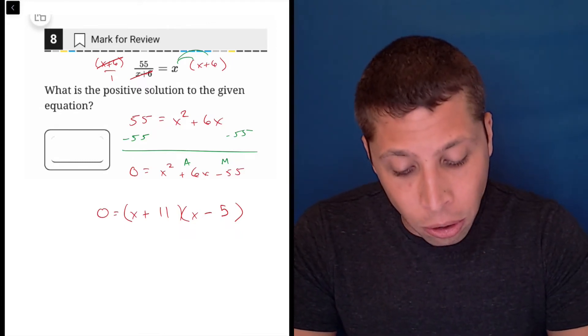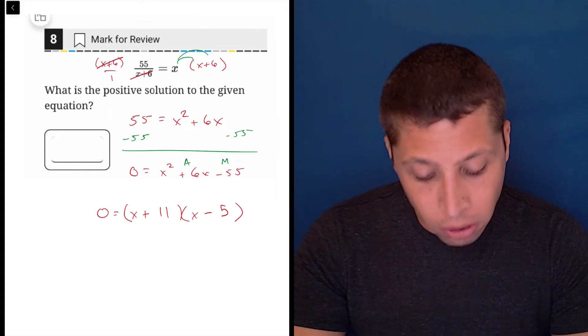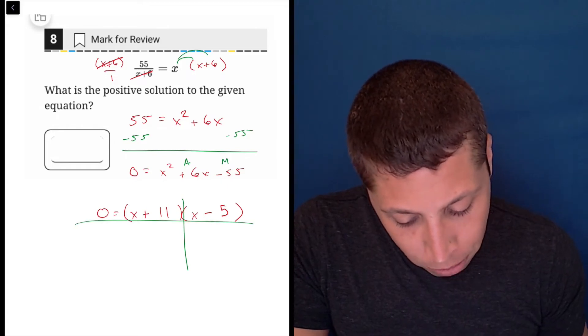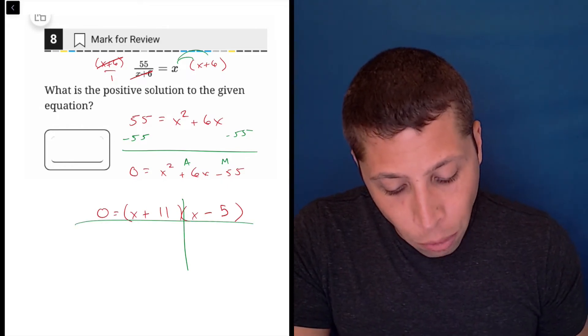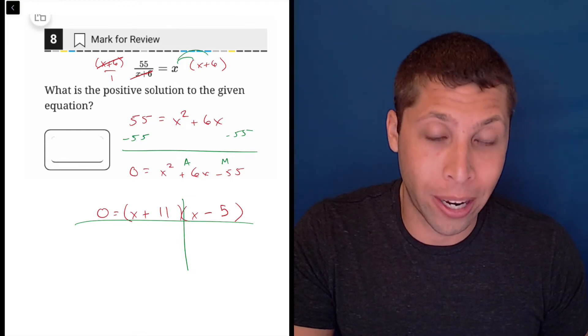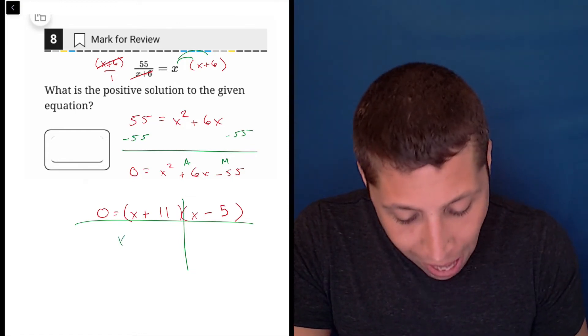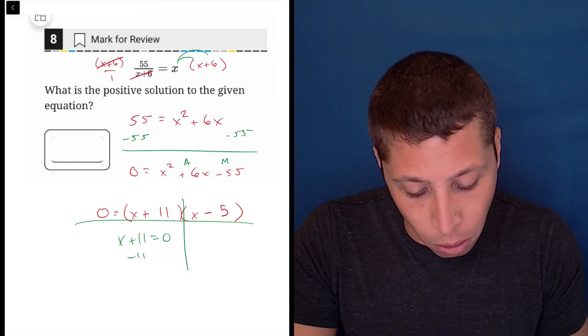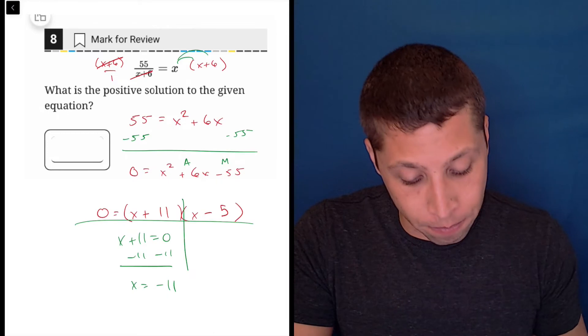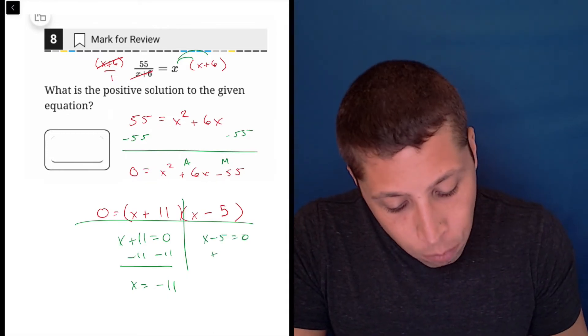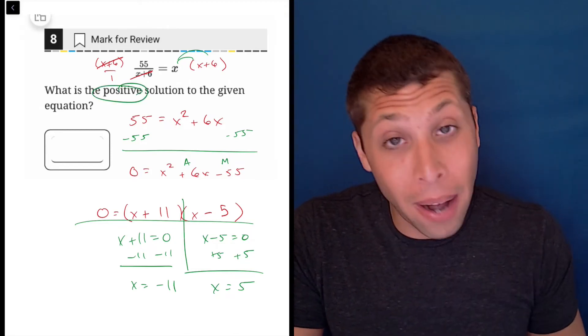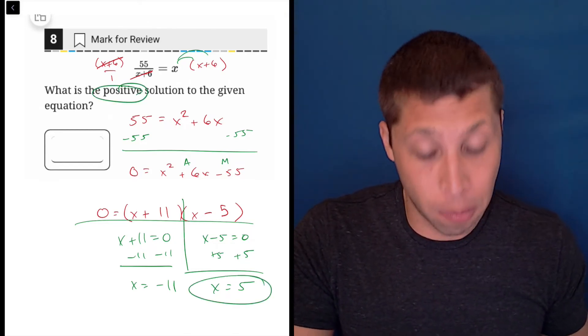But if we want the answer, we actually need to reverse these signs because of the way that factoring works. You probably can do this in your head, but just to remind you, basically what we're doing when we factor is we're turning our big equation into two smaller equations that are easier to solve. So x plus 11 would equal zero. We'd subtract 11 and we'd get x is equal to negative 11. If we did the same thing here, we would add the five and we would get x is equal to positive five. And since it wants the positive solution, we have to put five.